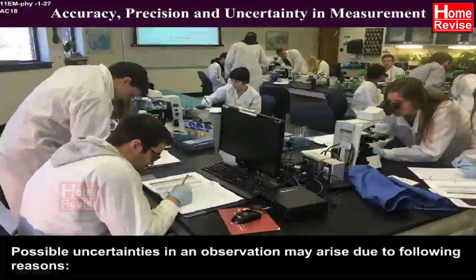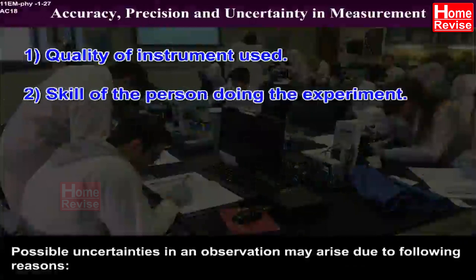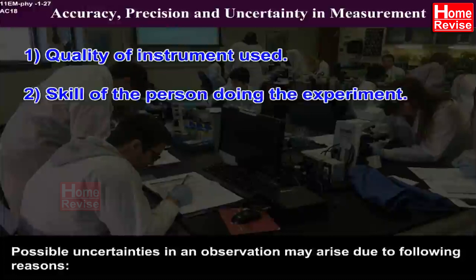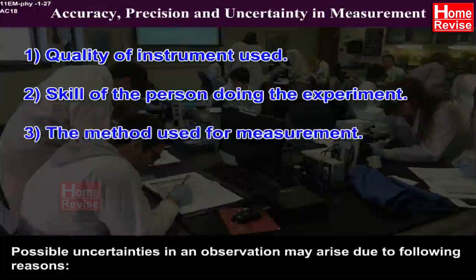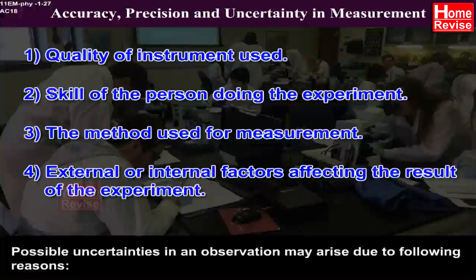Possible uncertainties in an observation may arise due to following reasons. 1. Quality of instrument used 2. Skill of the person doing the experiment 3. The method used for measurement 4. External or internal factors affecting the result of the experiment